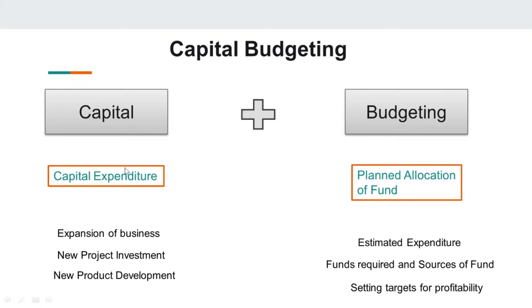For example, in any business when we are purchasing machinery, we are putting a lot of cost to purchase it. But we are not purchasing it to sell it; we are purchasing it to utilize it in the production process. So the benefit is reaped over a longer period of time. This is what capital expenditure represents. Capital budgeting, as a long-term investment decision, is also a kind of capital expenditure — a huge cost is incurred, and benefits are reaped over time in the form of cash flows and profits from investing in a particular project.